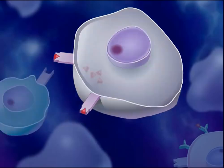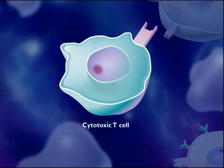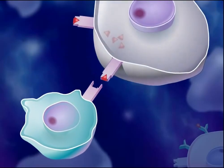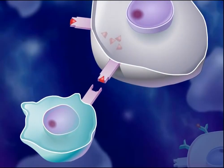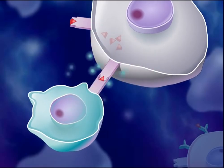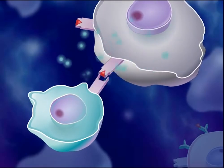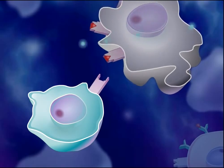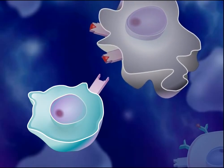The body makes millions of different types of cytotoxic T-cells, and each type is able to recognize a particular antigen. The cytotoxic T-cells that are capable of recognizing the antigen displayed on the surfaces of infected cells bind to the infected cells and produce chemicals that kill the infected cell. Death of the infected cells results in destruction of the pathogen.